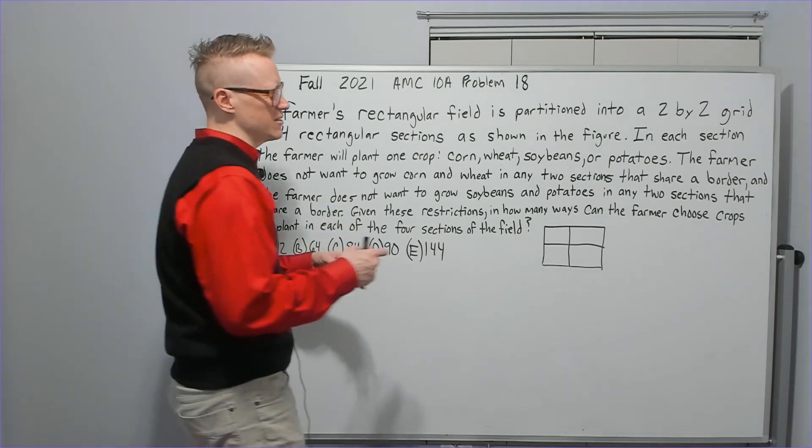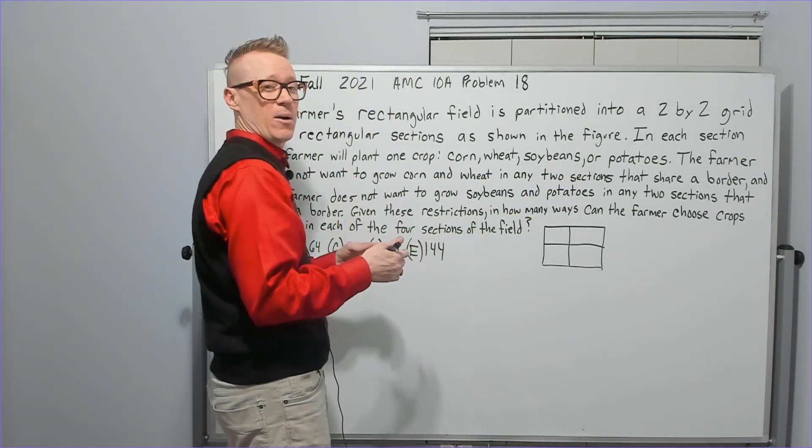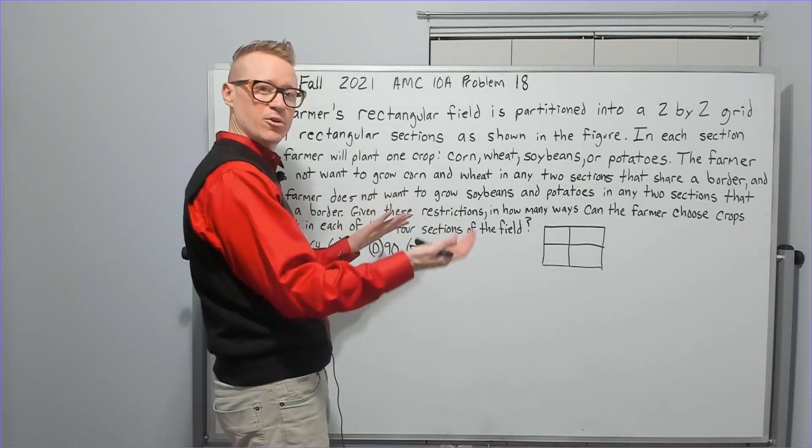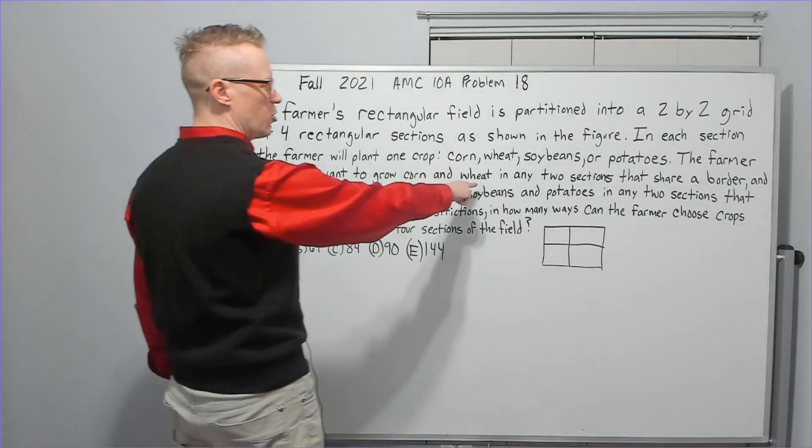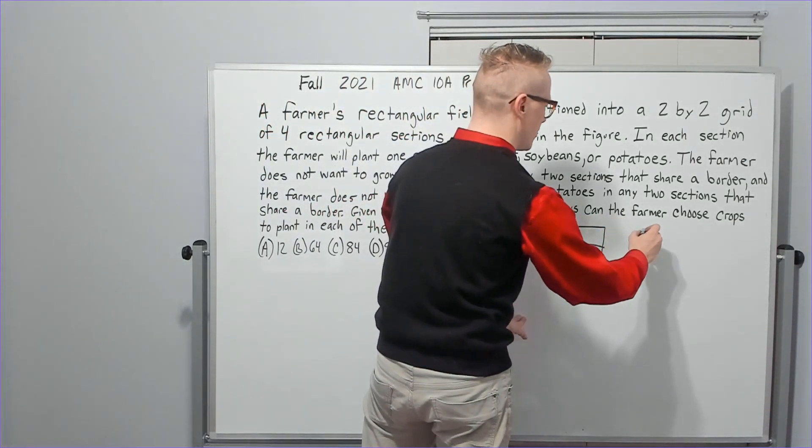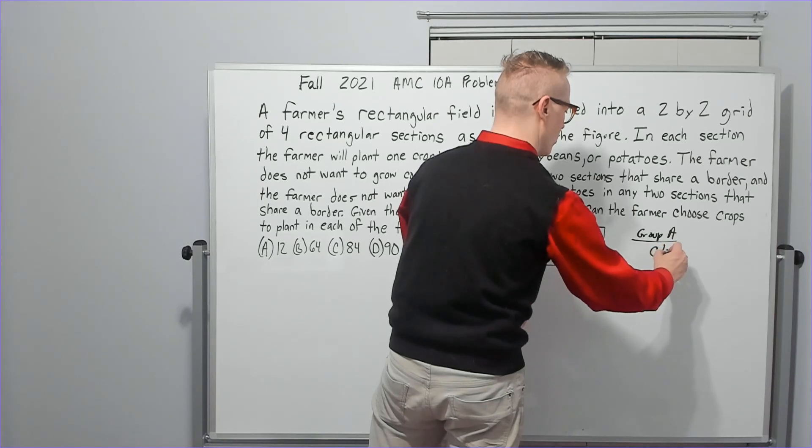When I first solved it, I wasn't quite sure, do they mean that I don't have to have one of each crop? But we'll see how you can unravel that mystery by progressing in the problem. The farmer does not want to grow corn and wheat in any two sections that share a border. I'm going to call that Group A, and it's going to be corn and wheat.